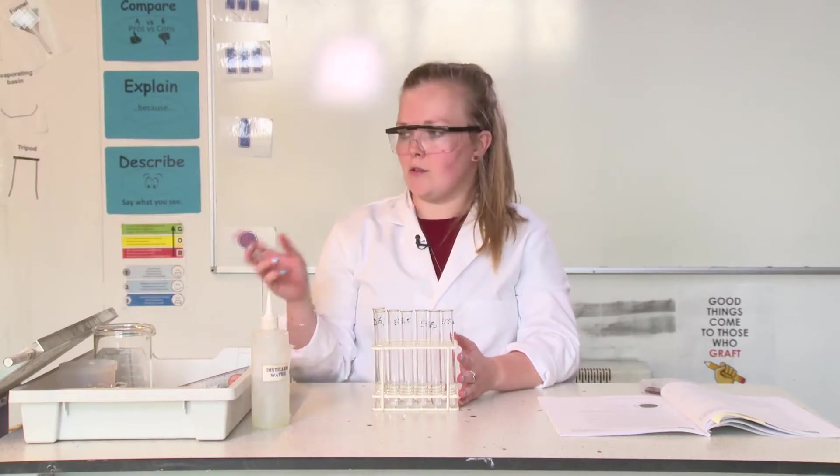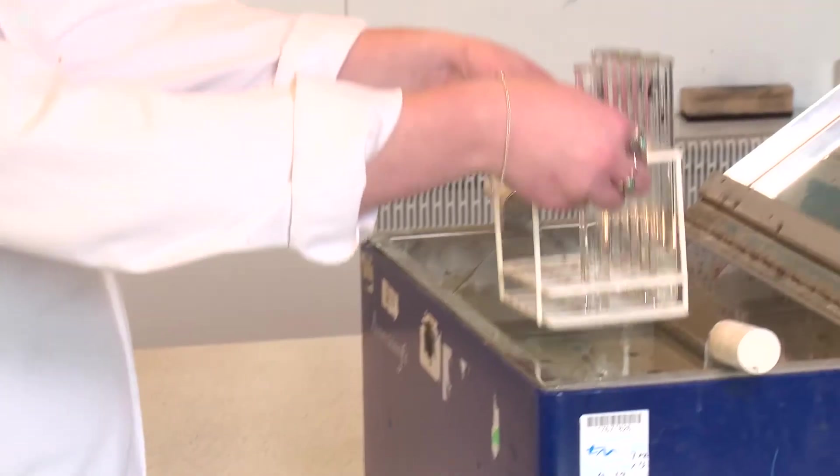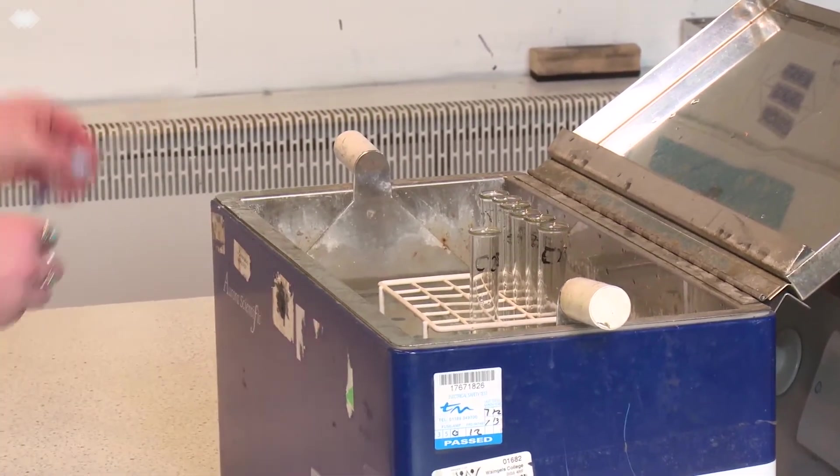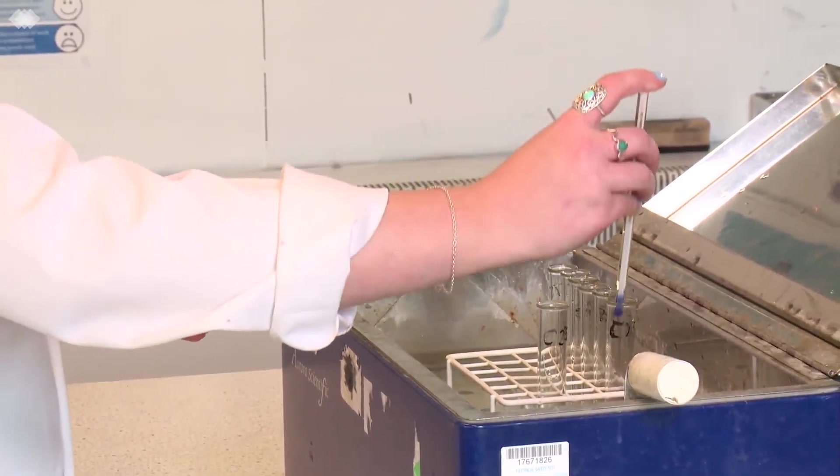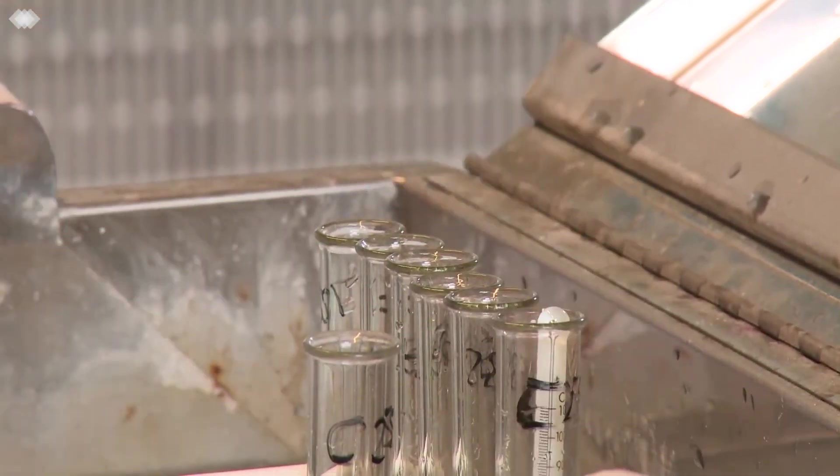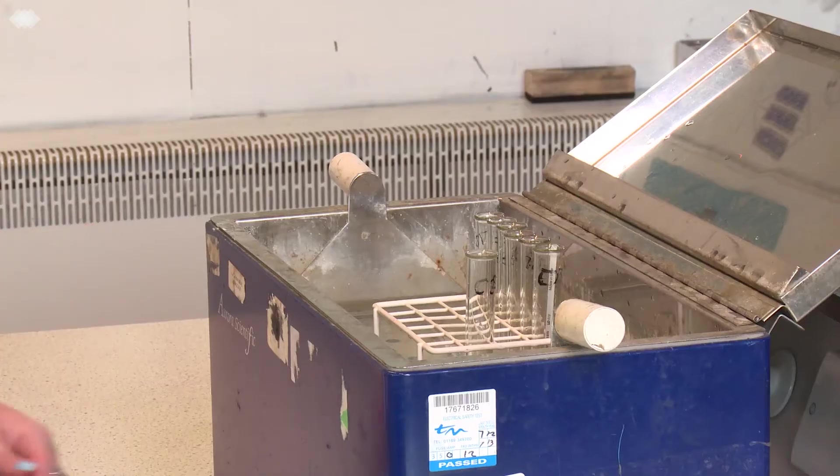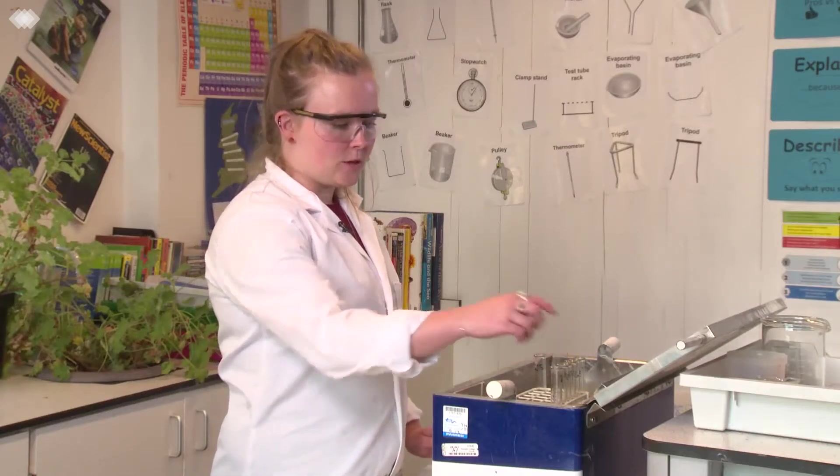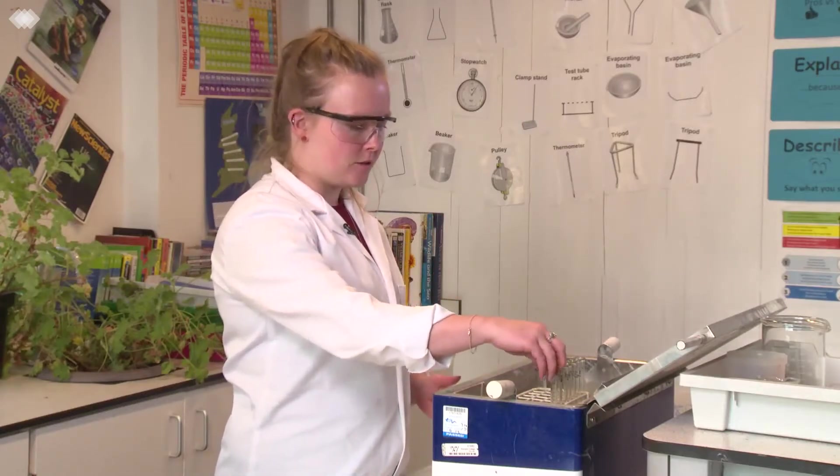These test tubes are now going to go into the water bath. Put your test tubes into the water bath. Our first temperature is 25 degrees. And I'm going to use a thermometer to check the water in the test tubes to make sure they reach the right temperature. Now that the water in the test tube has reached the correct temperature, 25 degrees,